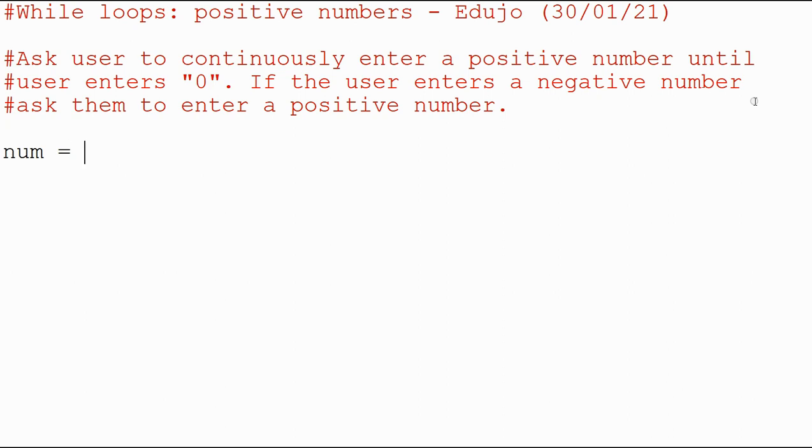declare a variable, and we're going to say num equals—let's say minus one, because remember we said it's going to be when they enter a zero. So anything but zero initially, and we're going to change it as we enter it.